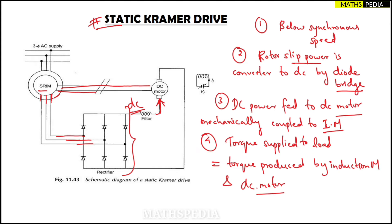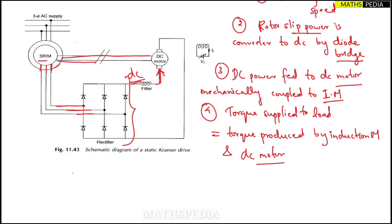Speed can be controlled by - here you can observe - the field of the DC motor. Speed control is obtained by controlling field current of the DC motor.